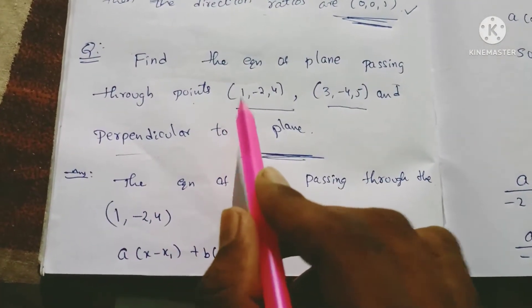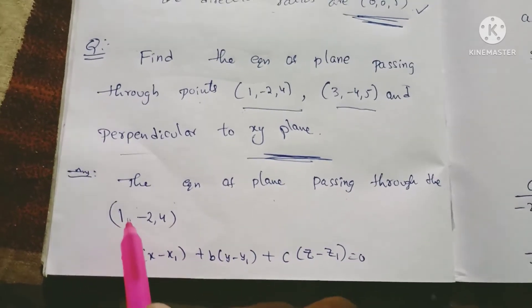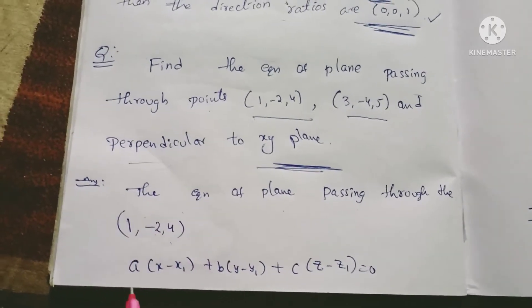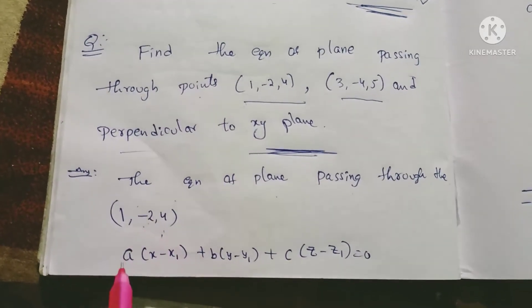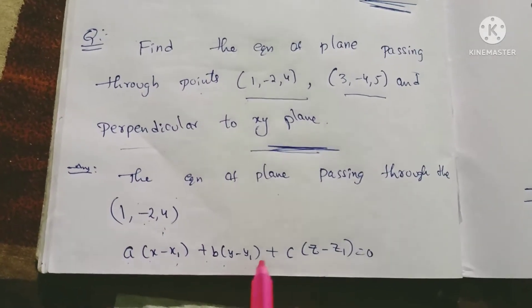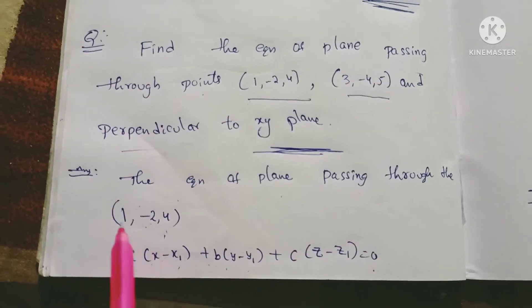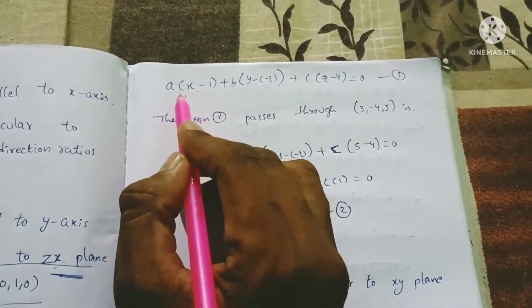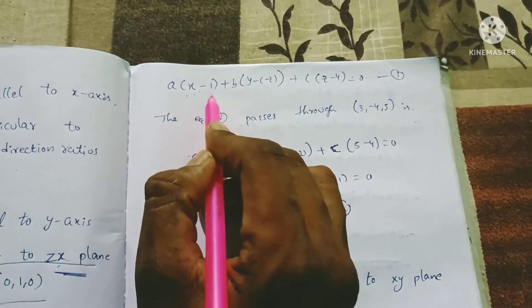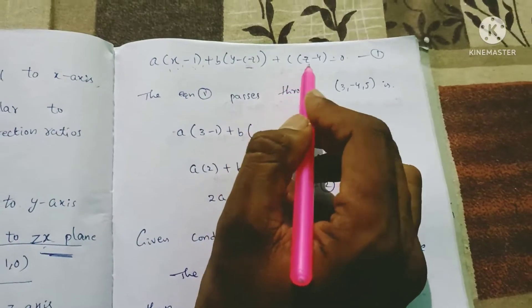The equation of the plane passing through the point (1, -2, 4): using the one-point formula, a(x − x₁) + b(y − y₁) + c(z − z₁) = 0. Substituting x₁ = 1, y₁ = −2, z₁ = 4, we get: a(x − 1) + b(y − (−2)) + c(z − 4) = 0. This is equation 1.